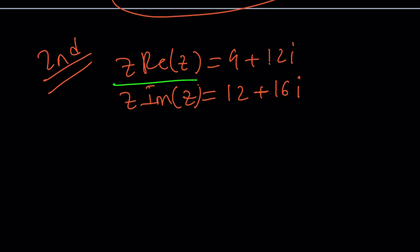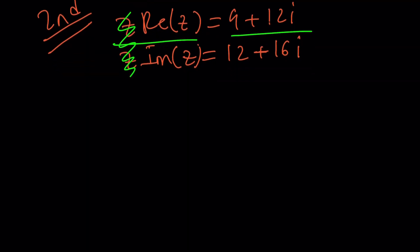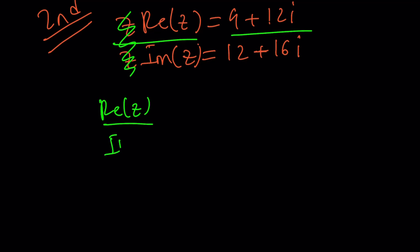And when I do, Z is going to cancel out. Nice. But not only that, on the right-hand side, we can factor out 3 and 4. And this time, 3 plus 4i cancel out, which is nice. And now we end up with something like this.